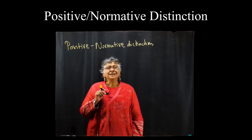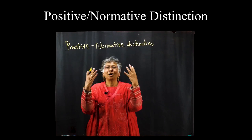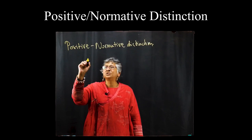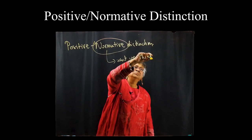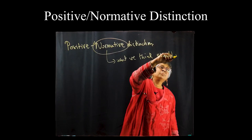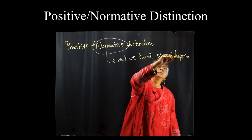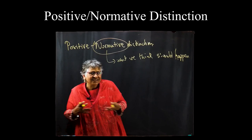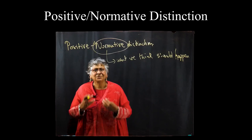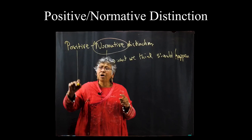The idea behind the distinction is that when we as economists provide policy solutions, we need to distinguish between two things. The normative is what we think should happen — your ethics, your values, your goals, your desires — where you say: I feel society should address these issues, I feel society should look like this, I feel this is what we have to do.